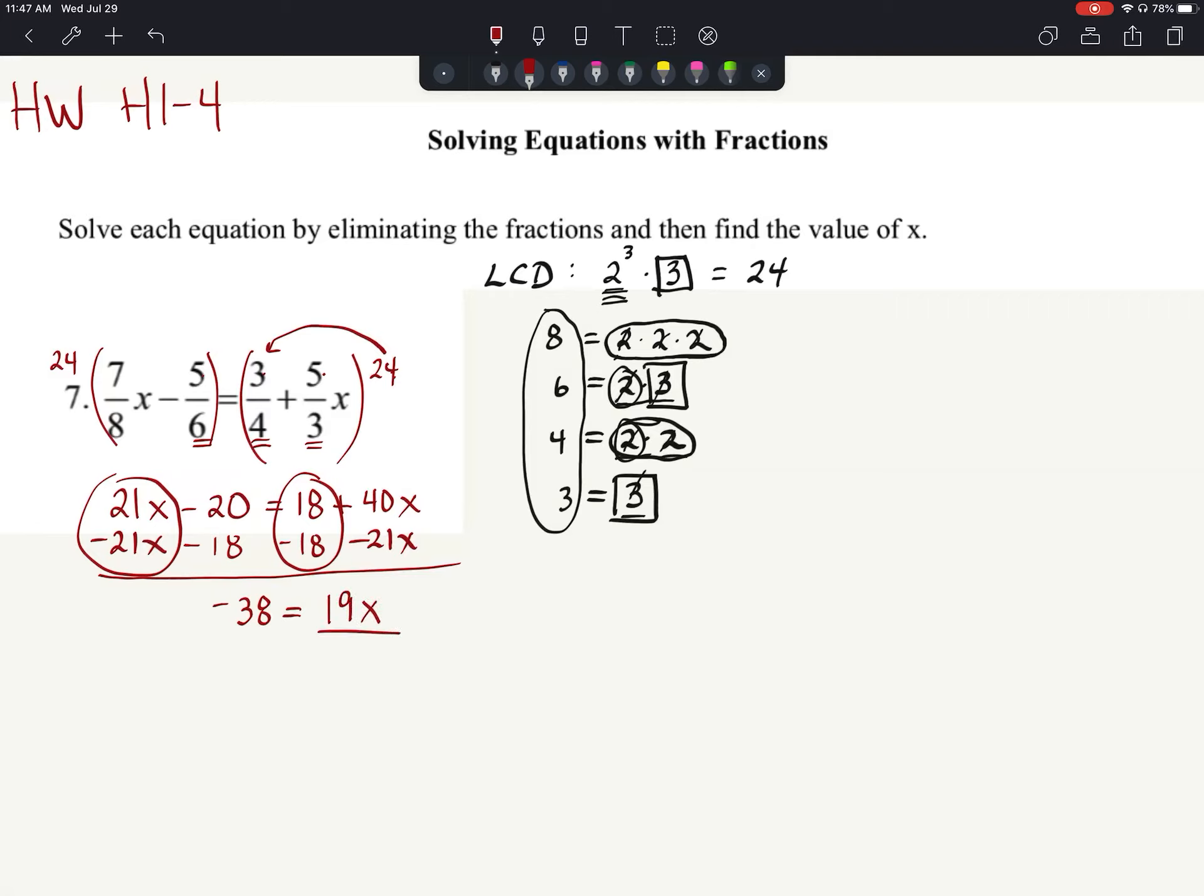So we are at the end here. 19 goes into 38 two times, but we got a negative 2 there, so x is equal to negative 2.